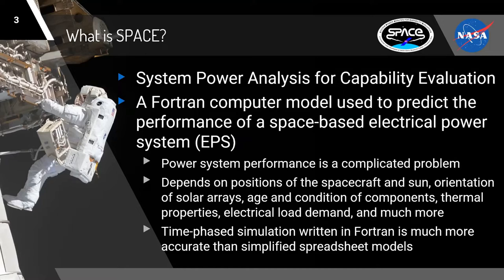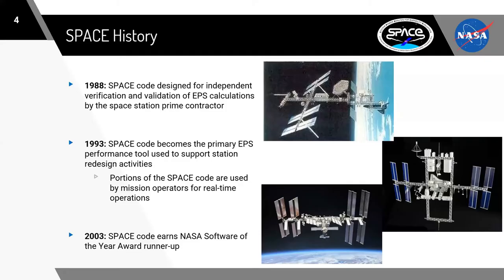That's data that we've retrieved from the International Space Station that helps us know that our code is working correctly and doing great modeling work. The history of SPACE — it's a program that got its start over 30 years ago, when it began development to verify and validate some contractor power system calculations for what was, at that time, Space Station Freedom. And five years later, it evolved into the primary tool used to model and guide the selection and final design of the electrical power system at the International Space Station.